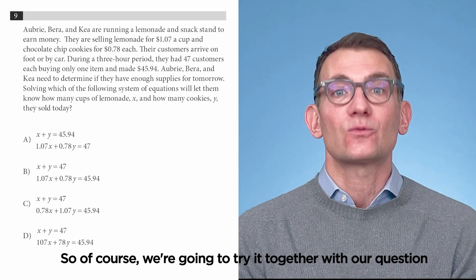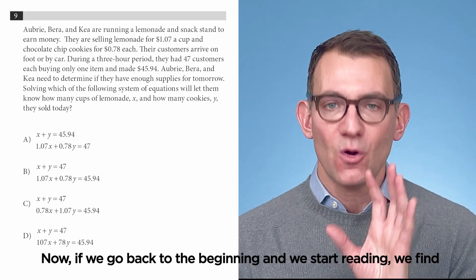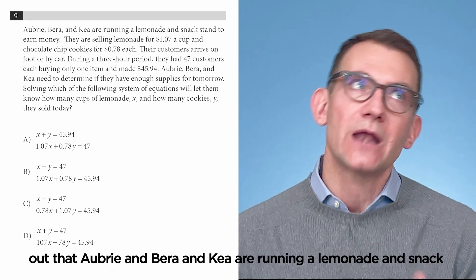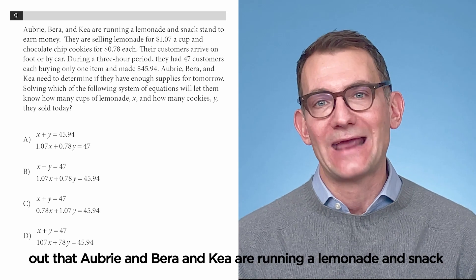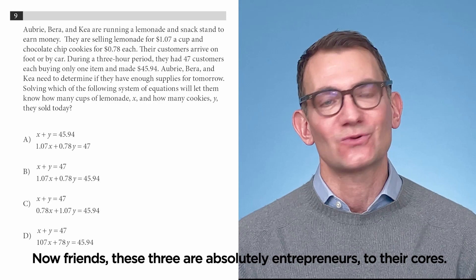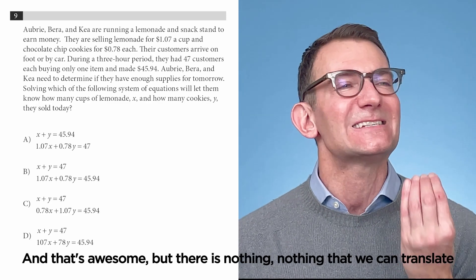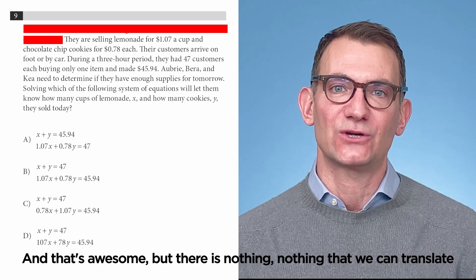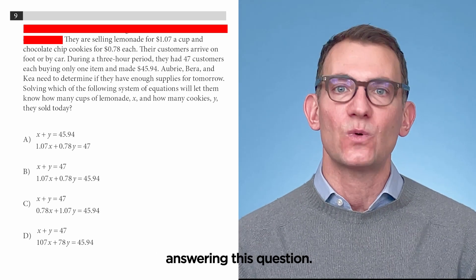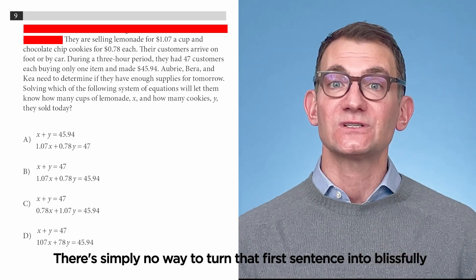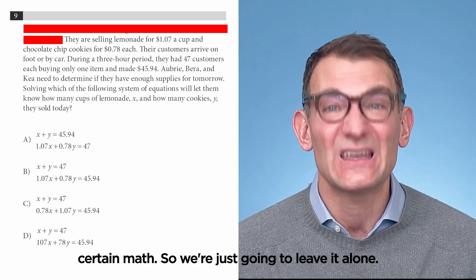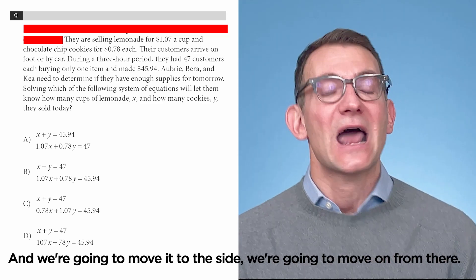So, of course, we're going to try it together with our question. Now, if we go back to the beginning and start reading, we find out that Aubrey and Vera and Kia are running a lemonade and snack outfit to earn extra money. Now, friends, these three are absolutely entrepreneurs to their cores, and that's awesome, but there is nothing, nothing that we can translate in that first sentence that is going to be useful to us in answering this question. There's simply no way to turn that first sentence into blissfully certain math. So, we're just going to leave it alone, and we're going to move it to the side, and we're going to move on from there.